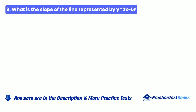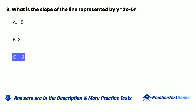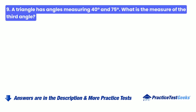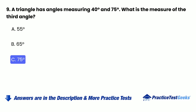Question 8: What is the slope of the line represented by y = 3x − 5? Question 9: What is the measure of the third angle? A. 55 degrees. B. 65 degrees. C. 75 degrees. D. 85 degrees.